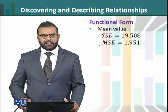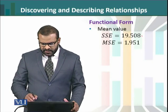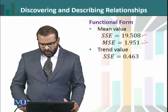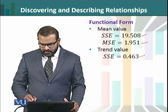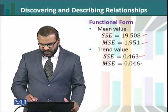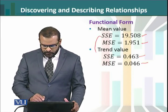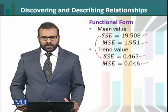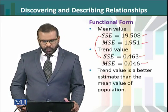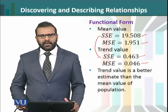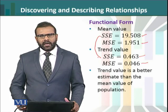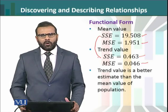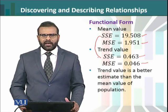Looking at the performance measures: for the mean value, the sum of squared error is 19.508 and the mean squared error is 1.951. For the trend line, the sum of squared error is 0.463 and the mean squared error is 0.046. Comparing these two — 19.5 versus 0.4 — there is a huge difference, showing that the forecast provided by the trend line is much better than the mean value. We conclude that in many situations, we may have some functional form of the system instead of using the mean value as a forecast.